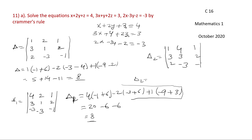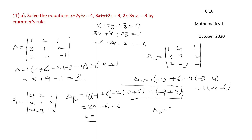D2 equals 1 into (3 into minus 1 minus 2 into minus 3), minus 4 into (3 into minus 1 minus 2 into 2), plus 1 into (3 into minus 3 minus 2 into 6). Simplifying: 3 into 1 gives 3, minus 4 into minus 7 gives 28, minus 9 minus 6 gives minus 15. So D2 equals 3 plus 28 minus 15, which is 16.